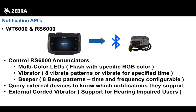A couple of other things added in the notification API allow you to close the loop — to know what type of notification device is connected. Once you have a notification object you can query it to find out what types of notifications it's capable of. We've also added support for an external corded vibrator for hearing-impaired users. One issue with the RS6000 is that it's attached to your arm via a wrist strap, and the vibration gets deadened by all the strap material, making it less felt. So we have an external device that allows you to get that vibrator motor closer to your skin.